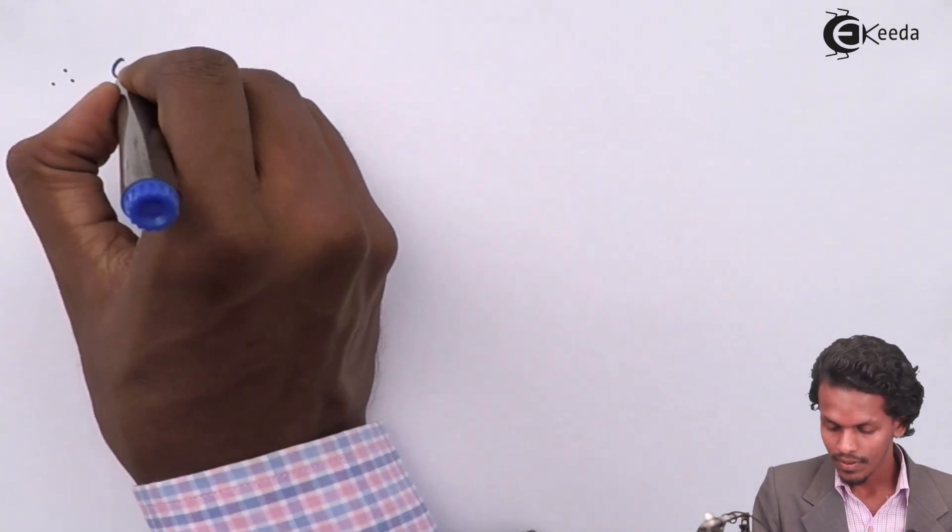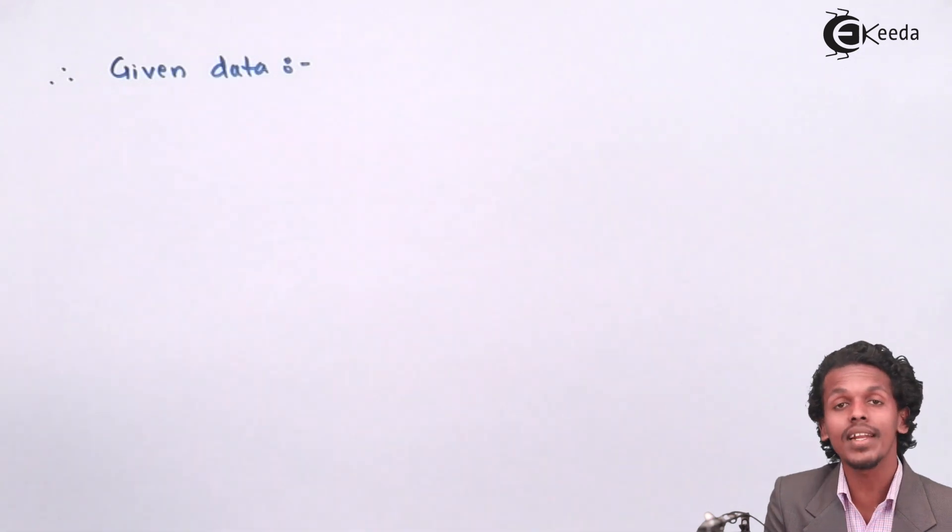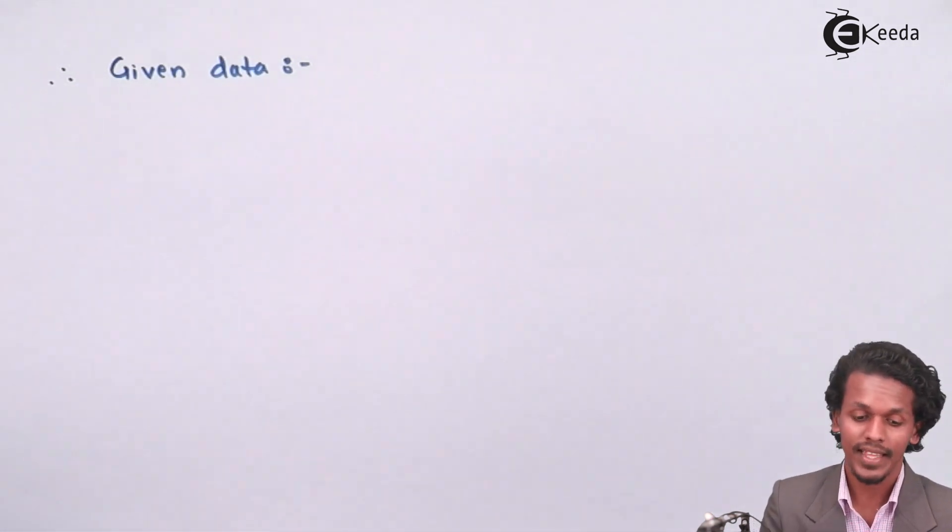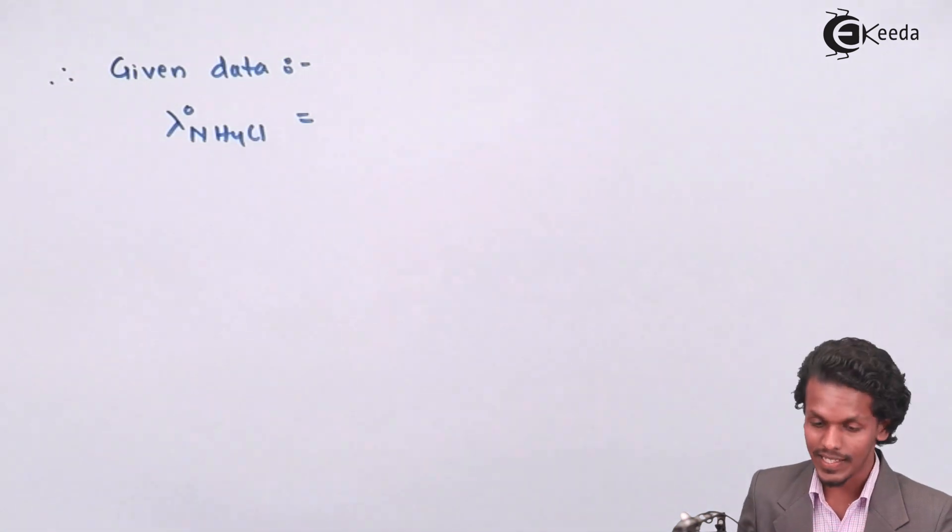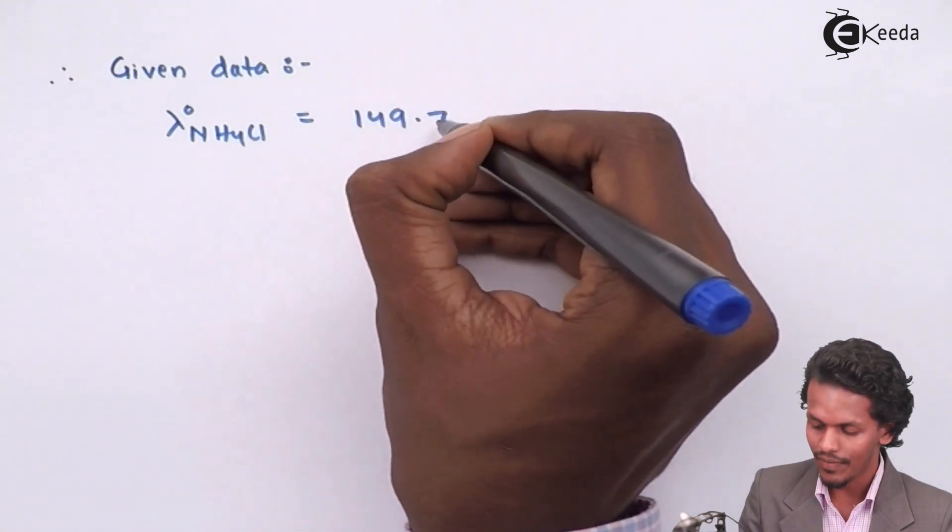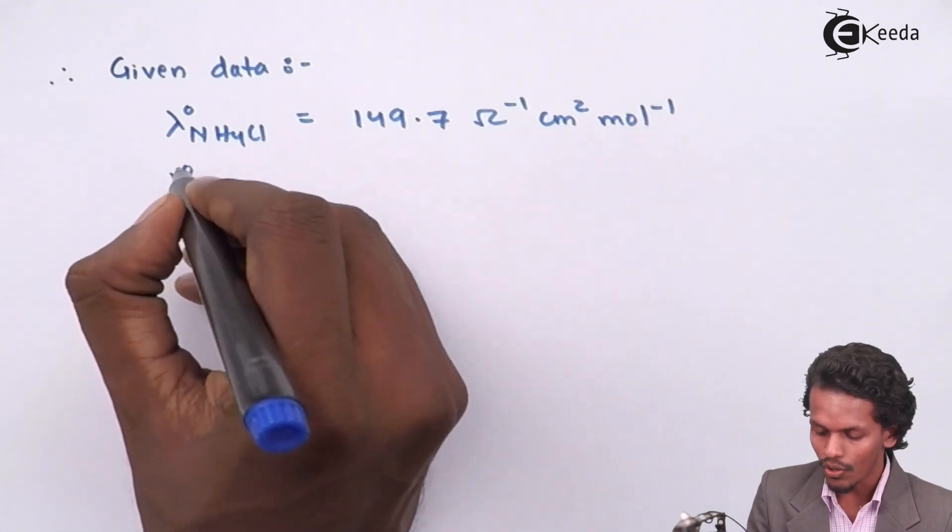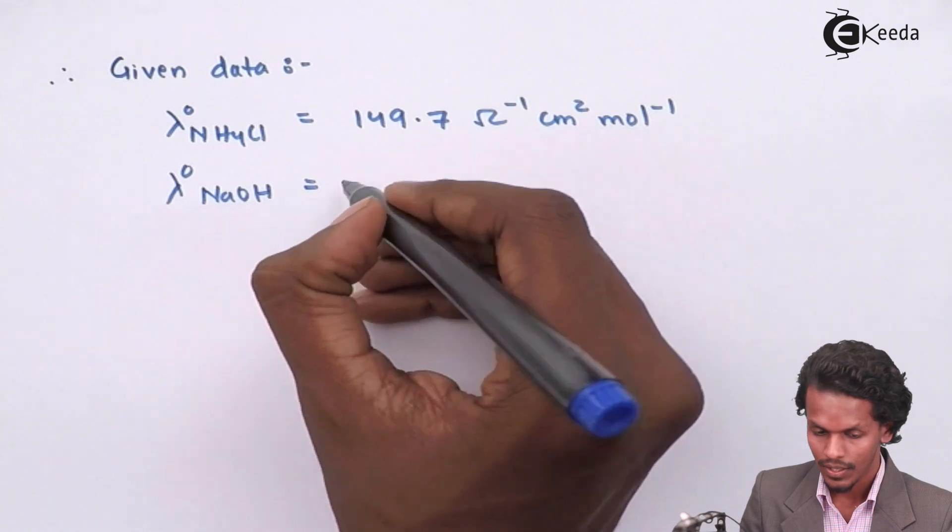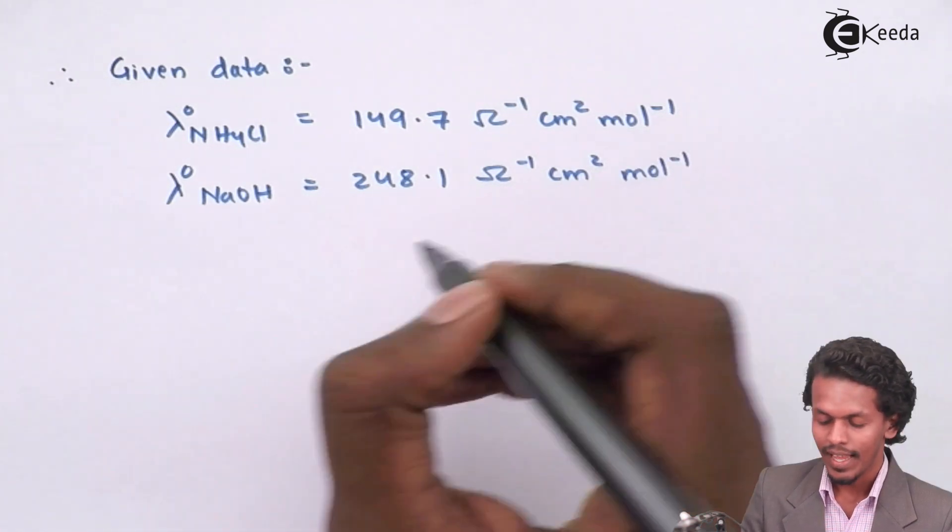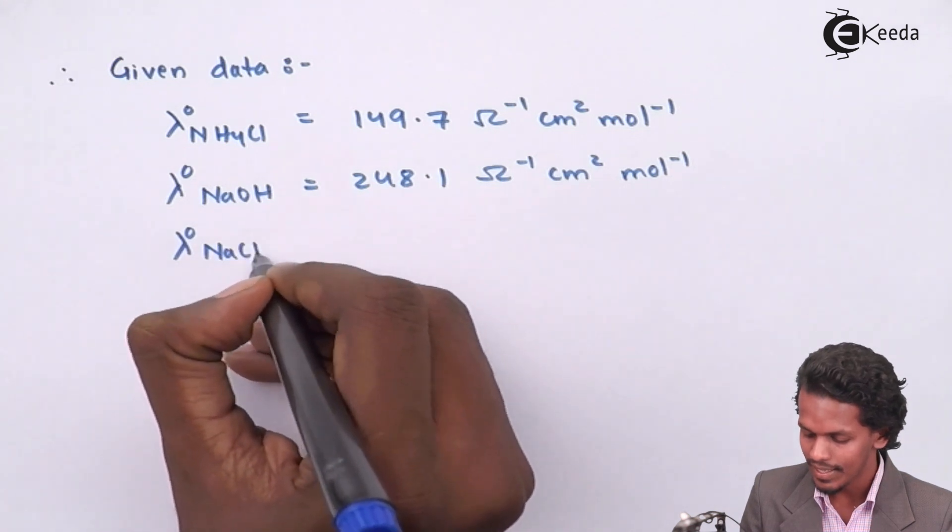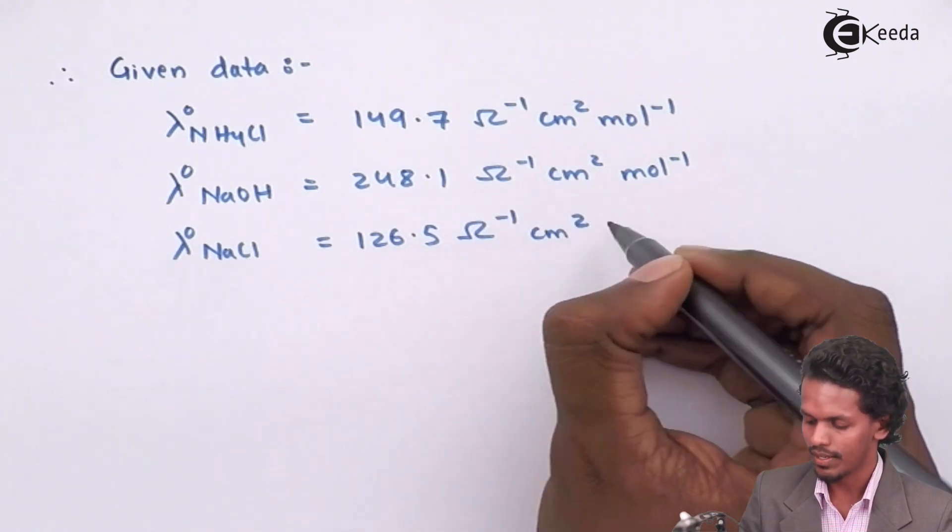So therefore the given data says that the molar conductivity at infinite dilution for NH4Cl, that is lambda naught for NH4Cl, is given as 149.7 ohm inverse centimeter square mole inverse. Lambda naught for NaOH is 248.1 ohm inverse centimeter square mole inverse. And lambda naught for NaCl is given as 126.5 ohm inverse centimeter square mole inverse.